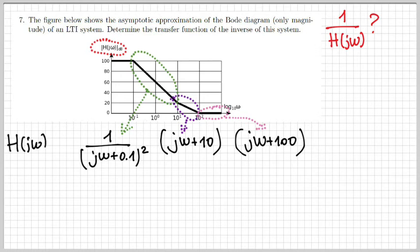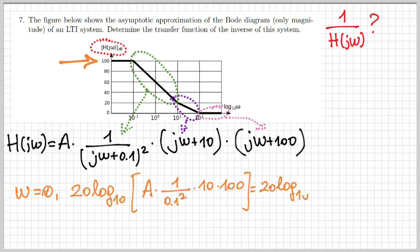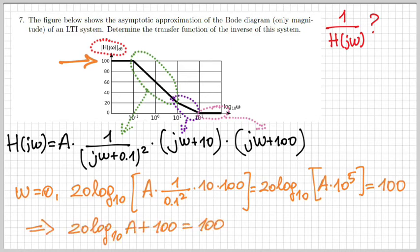We might have a multiplying coefficient A which we need to determine. We observe that for very small frequencies, say for ω equals zero, the value has to be 100 dB. Let's set ω equals zero. Then we get 20 log₁₀ of A times 1/(0.1)² times 10 times 100. If we calculate this, we get 20 log₁₀ of A times 10⁵. We want this to equal 100 dB. For that to happen, we need 20 log₁₀ A equal to zero, which means A equals one.